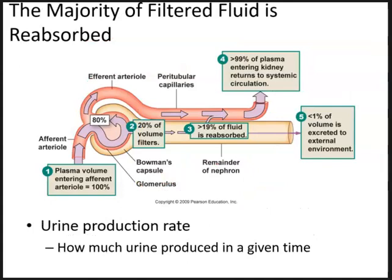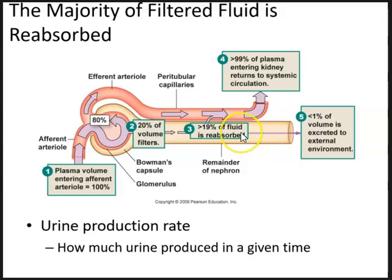About 80% of the plasma remains in the glomerulus, and 20% is filtered into the proximal convoluted tubule as ultrafiltrate. A little over 19% of that fluid is reabsorbed, so slightly less than 1% of what is filtered is excreted to form urine that goes to the external environment.